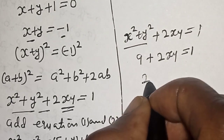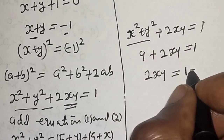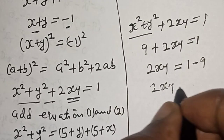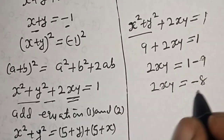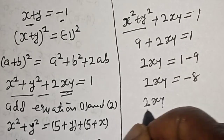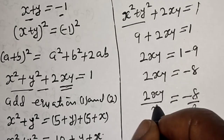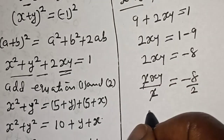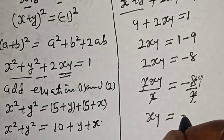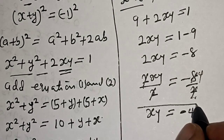Substituting back into the equation, we have 2xy is equal to 1 minus 9, so 2xy is equal to minus 8. Let's divide both sides by 2: 2xy divided by 2 is equal to minus 8 divided by 2. The 2s cancel, giving us xy is equal to minus 4. That is our final answer.